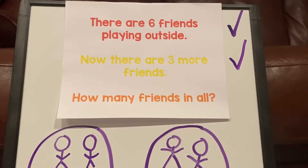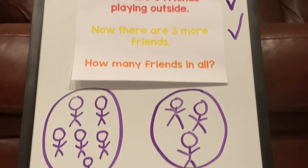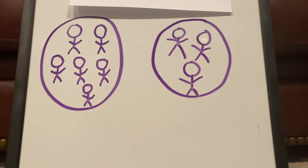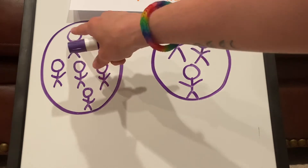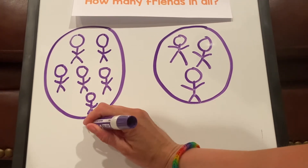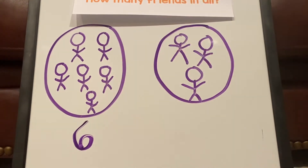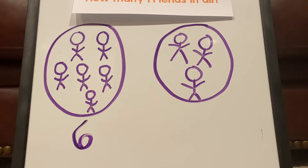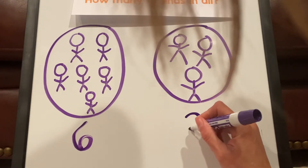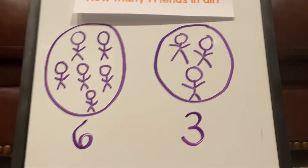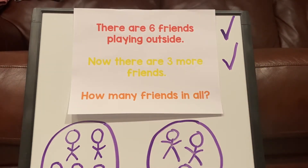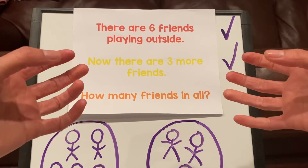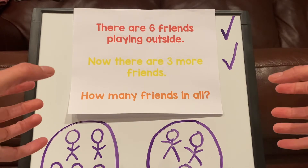How many friends in all? So we need to find the total amount of friends in both groups. But before we do that, we need to write our numbers. What number goes here? Let's count — one, two, three, four, five, six. Six goes here because there's six friends in this group. How many friends are here? One, two, three. Three. Let's go back to our problem. Our question is, how many friends in all? So we have our six friends over here and we have our three friends over here. In all means you put them together.